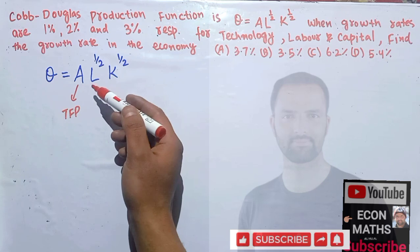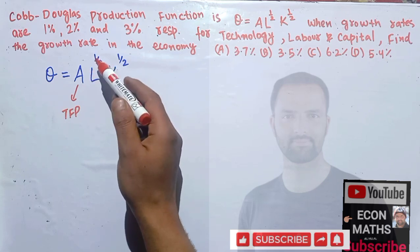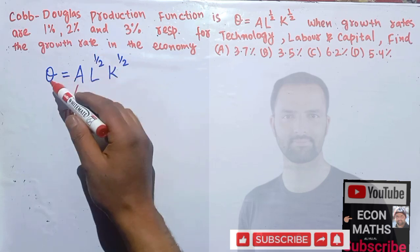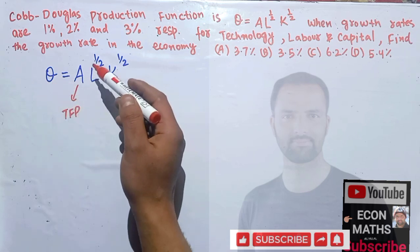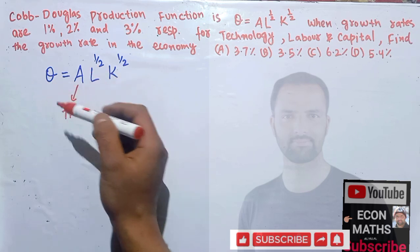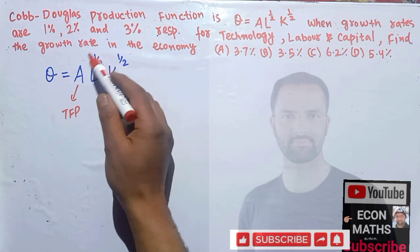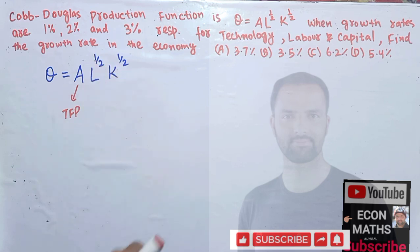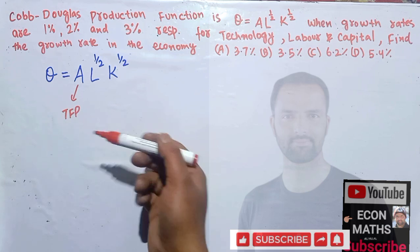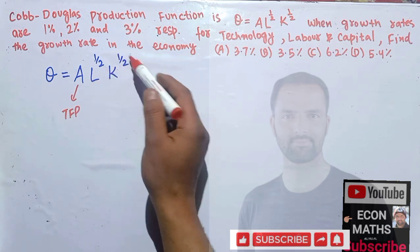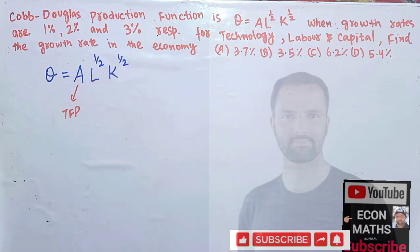Total factor productivity can show the state of technology that the economy is actually facing. L to the power 1/2 shows the output elasticity of labor — that means what happens to our output when we increase labor by 1%. This gives us the magnitude of the output elasticity of labor, and similarly, K to the power 1/2 is the output elasticity of capital.